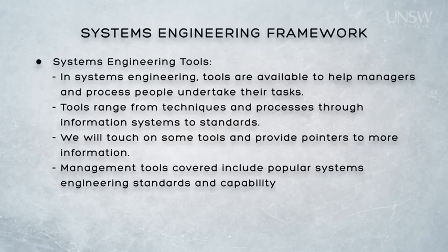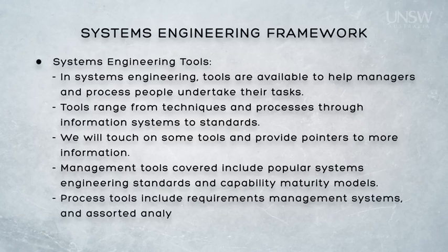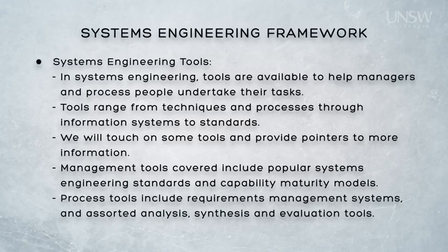Throughout the course, we present generic process tools such as the requirements breakdown structure (RBS), functional flow block diagrams (FFBDs), work breakdown structures (WBS), trade-off analyses, and prototyping and simulation as examples of tools that may be applied to the system engineering effort for processes. We also describe the systems engineering management tools of standards and capability maturity models.